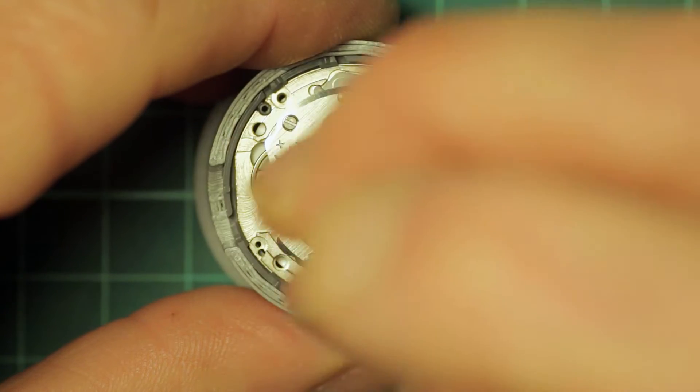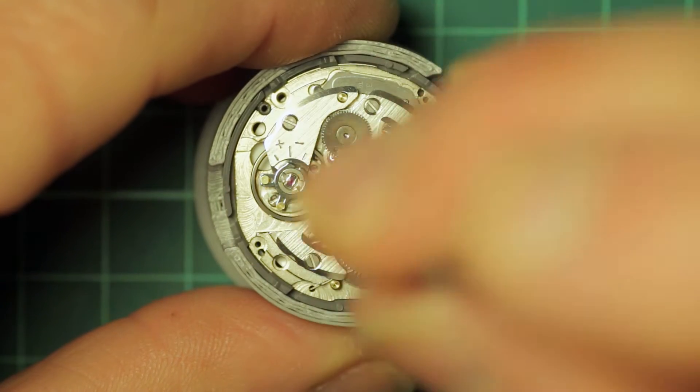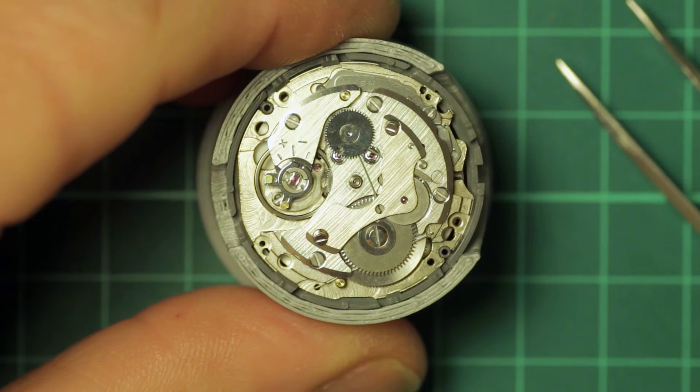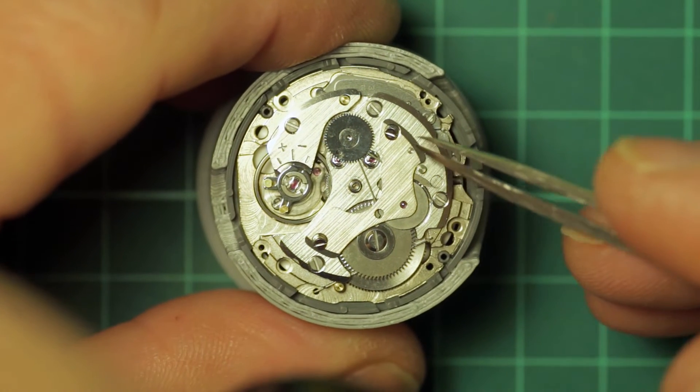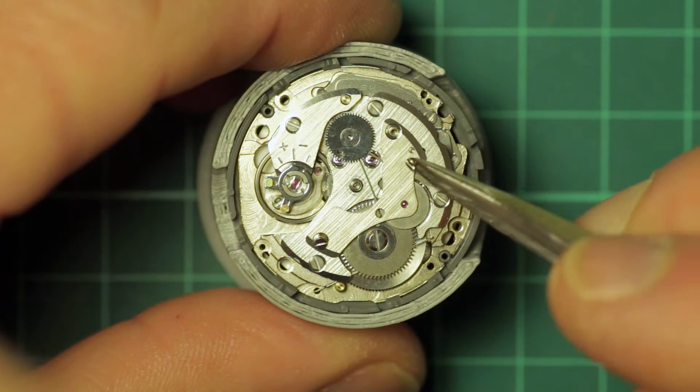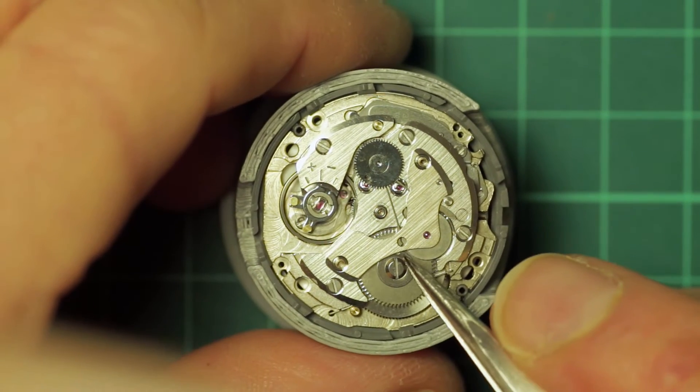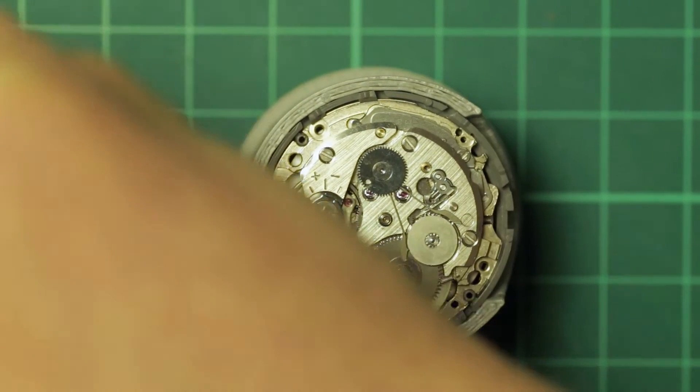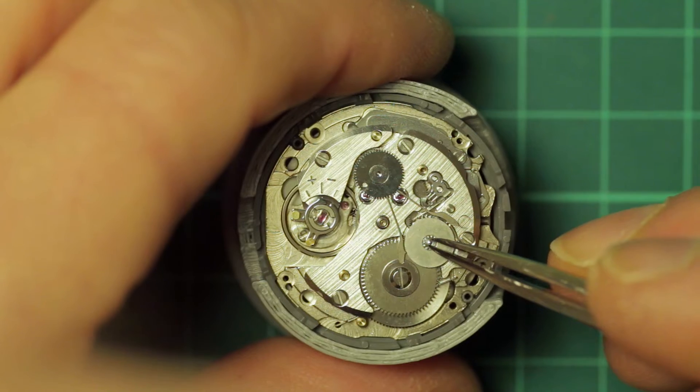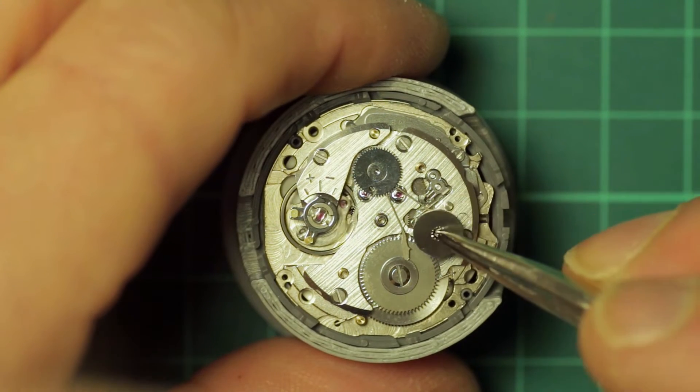Then the next step is to remove the automatic winding bridge which is secured by two screws. This then lifts away and the reduction wheel lifts away.